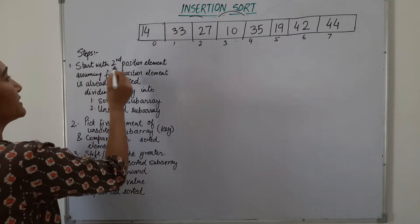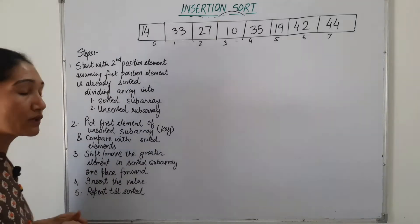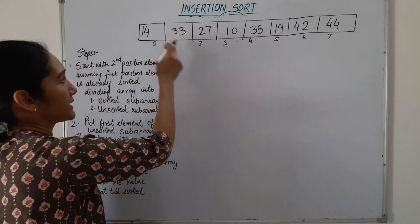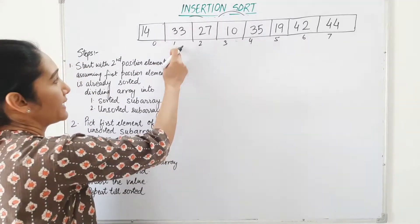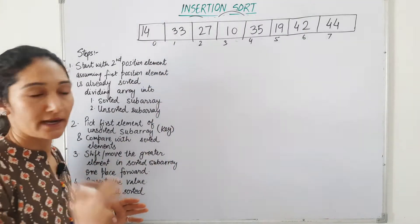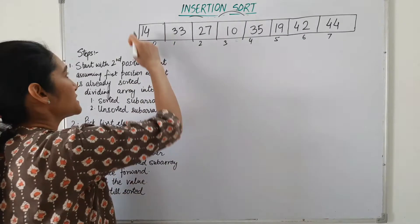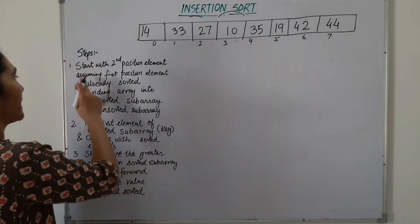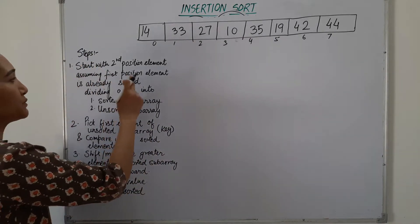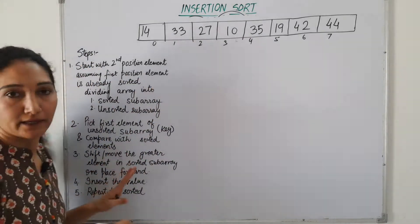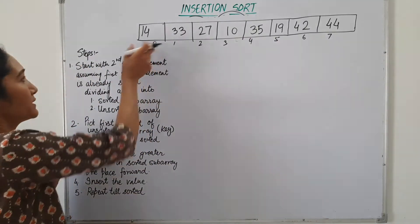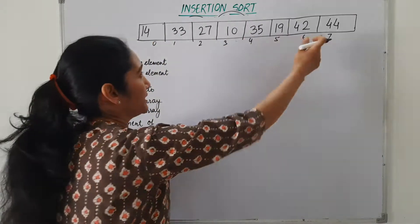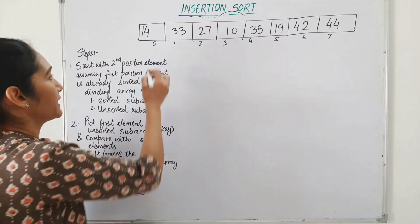The array has a total of 8 elements. I have taken more elements so that we can cover all the conditions and understand the example well. The steps listed here cover this algorithm overall, and the basic concept will make you understand how the algorithm works for sorting. We start with the second position element — the second element here is 33. The first position element we will assume is already sorted. So the complete array will be divided into two parts.